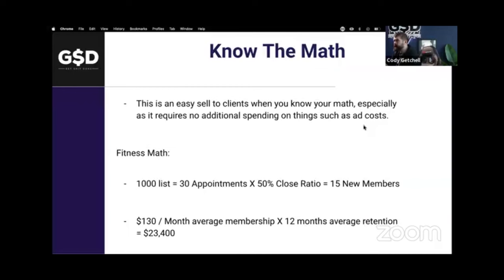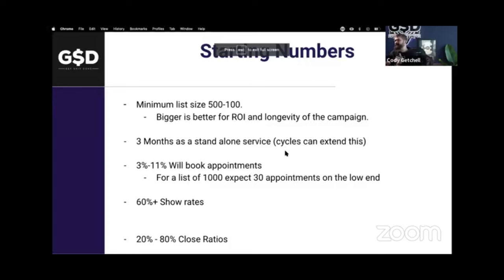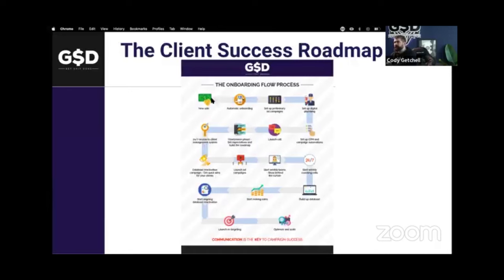We want a minimum list size of about 500 to 1,000, but bigger is obviously better for ROI and longevity of the campaign. We can do it as a three-month standalone service, or just make it part of your done-for-you offer. You can charge thousands for this as a standalone thing, but I prefer it as a foot-in-the-door aspect of your overall larger high-ticket item.